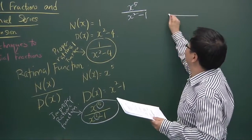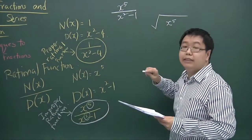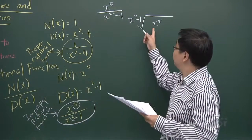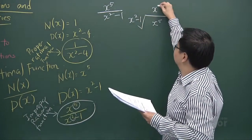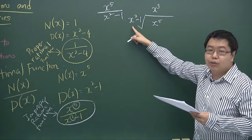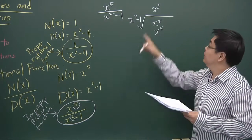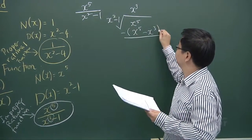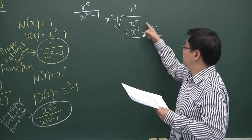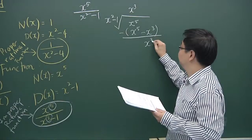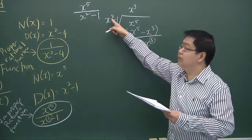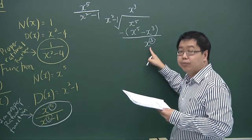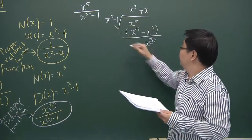We use long division and divide x⁵ by x² minus 1. When you divide x⁵ by x² minus 1, you look at x³. Multiply by x², that gives x⁵. Then x³ multiplied by minus 1 gives minus x³. We subtract to get x³. However, the degree of this is still bigger than the degree of the divisor, so we ask what must multiply x² to give x³.